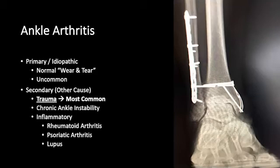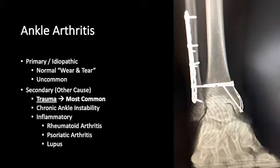Ankle arthritis: primarily in the hip and knee, it's very common to be wear and tear. But in the ankle, that's uncommon — it's oftentimes post-traumatic. So we have a wide spectrum of patients, from very young to the elderly, who have ankle arthritis, and that affects the treatments we can do. Chronic ankle instability — the ligamentous structures that balance the ankle, as Dr. Amendola showed — can lead to various types of ankle arthritis.